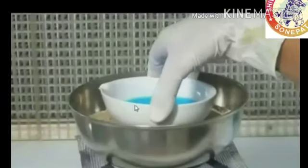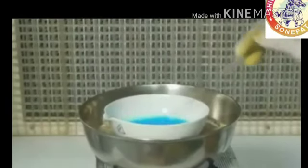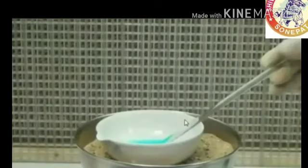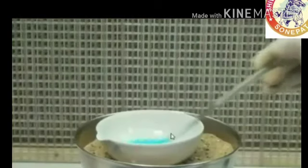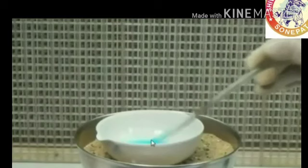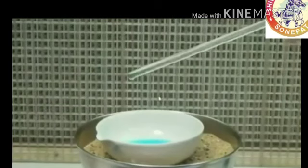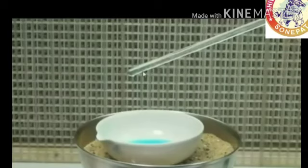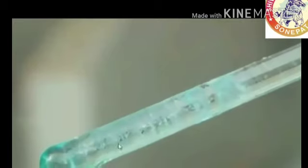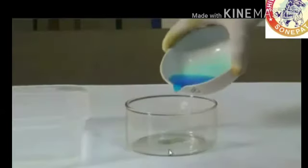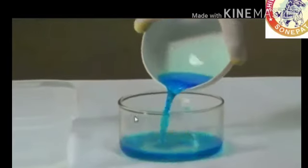In the filter paper, all the insoluble impurities get collected. Now, put the china dish on the sand bath so that we can heat this solution slowly by constant stirring with a glass rod. After some time, we get some solid substance on the glass rod. This temperature is known as the crystallization temperature.